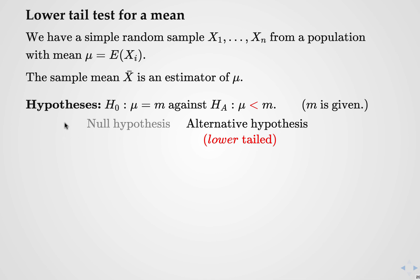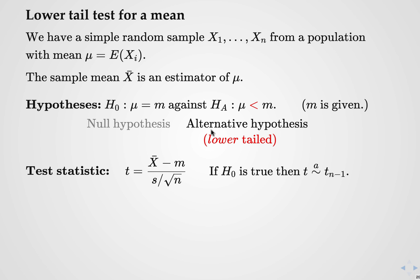The hypotheses are slightly different. The null hypothesis is the same — the mean is equal to some given value — but the alternative hypothesis is now lower-tailed, meaning we're interested in deviations of the population mean below the hypothesized value. You'll see that information to use the lower-tailed test comes from the wording of the question that you're trying to answer.